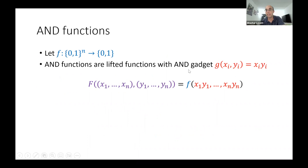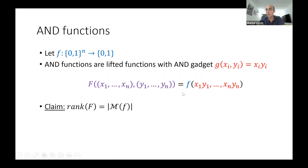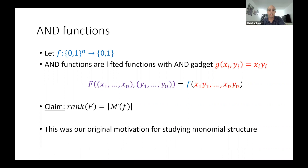Concretely, if g is the AND gadget — two bits x and y, output their AND — then the rank of the resulting matrix is exactly the number of monomials of the boolean function f. So there's a very natural connection between the monomials of a boolean function and this special case of matrices where you want to understand the relationship between rank and combinatorial structure. This is what motivated us to study this question.